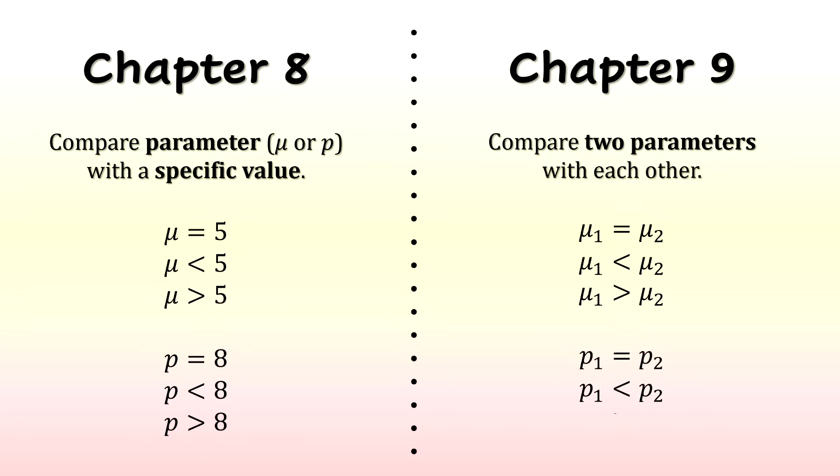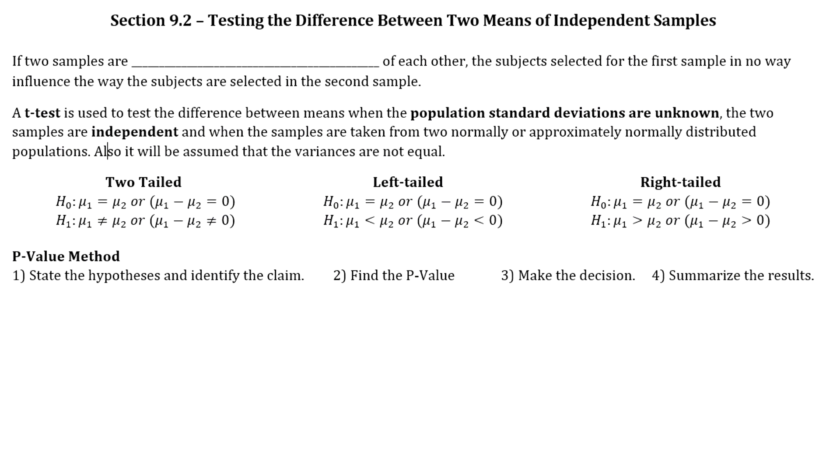And then we're also going to do a section about proportions. So we'll be looking at two proportions for two separate groups, and we'll do some sort of comparison between the two of them. So now that you've had a super quick preview of chapter 9, let's go ahead and start with our first couple sections. Section 9.1 and 9.2 is going to be about testing the difference between two means of independent samples.